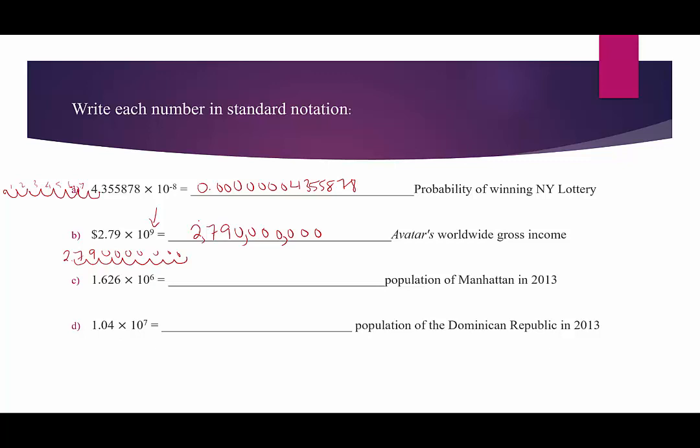How about the population of Manhattan in 2013? It's 1.626 times 10 to the 6th. That's telling us move the decimal point six places to the right. So when we move it six places to the right, that'd be 1, 2, 3, 4, 5, 6. Looks like we're filling in three zeros into our gaps. That's 1,626,000. That was the population of Manhattan in 2013.